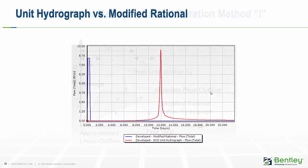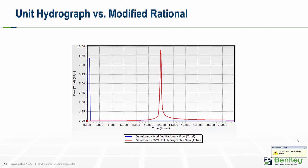Here's a comparison showing the modified rational hydrograph versus the SCS unit hydrograph method. The results are not compatible — you can't expect the same peak flow or same volume between the same return period events since they are two entirely different methods. Comparing results from a pond design using one method to the other is essentially comparing apples to oranges.